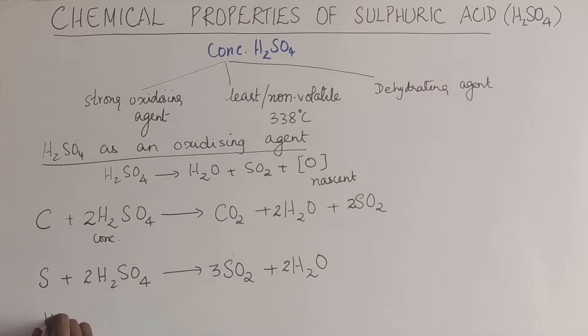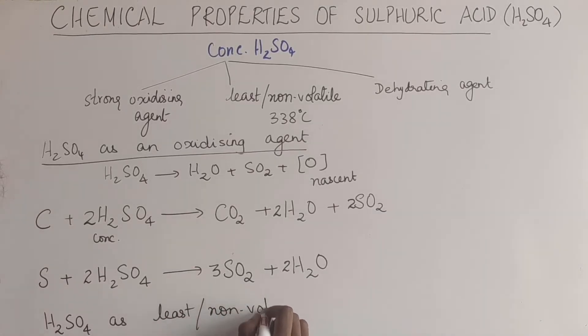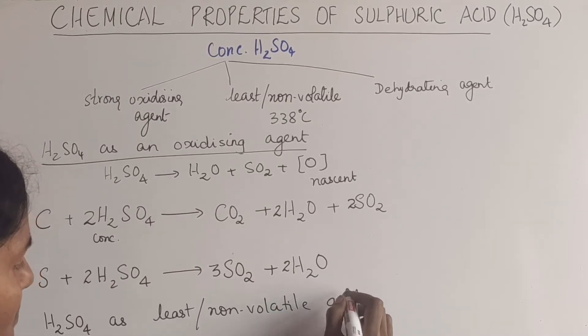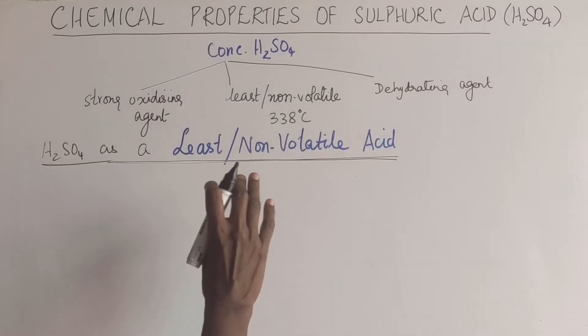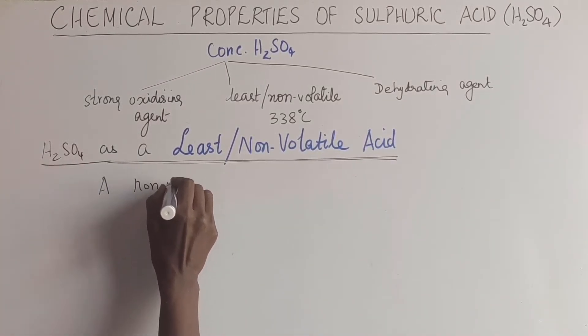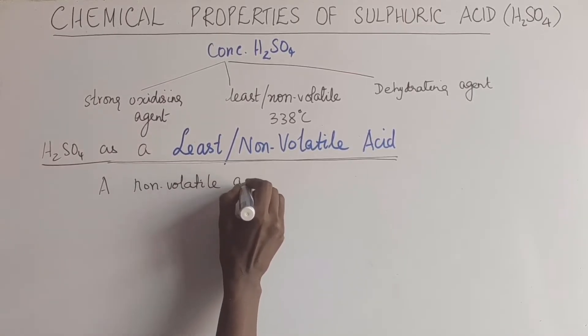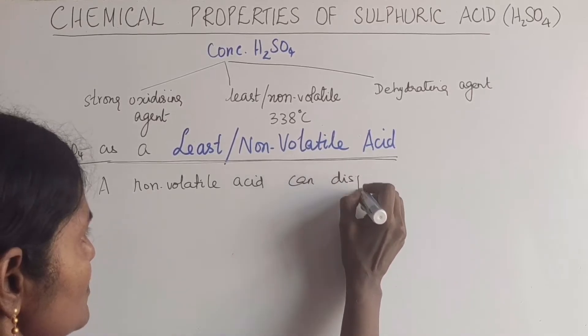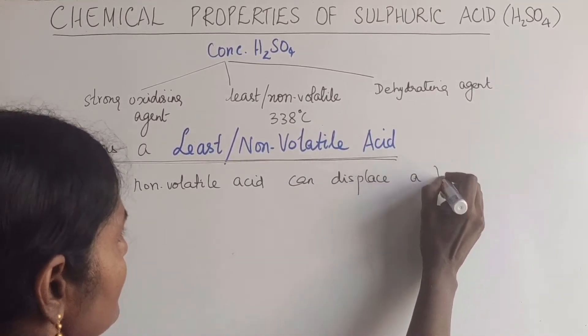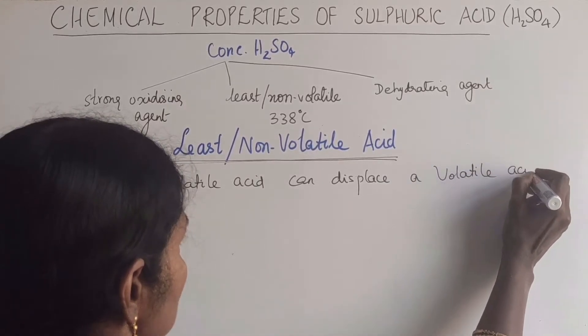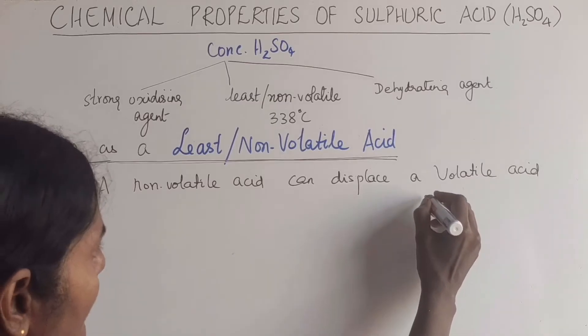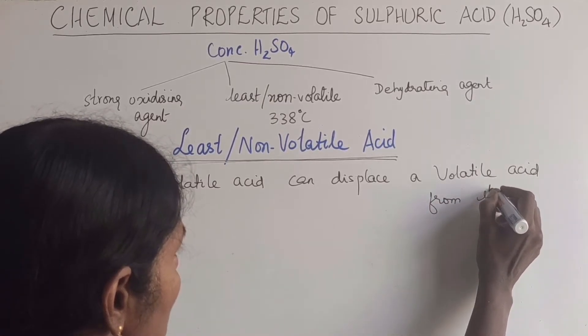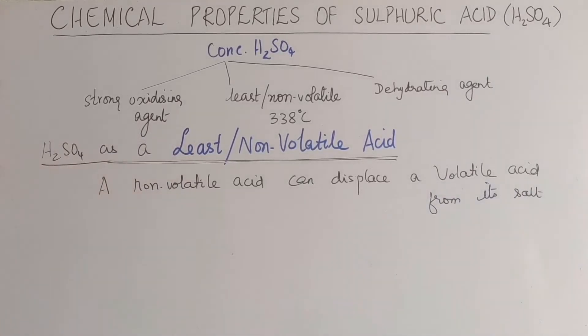Next, we have sulfuric acid as the least or non-volatile acid. A non-volatile acid can displace a volatile acid from its salt. This must be in our mind every time we work on this property.